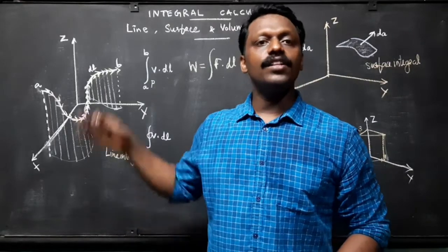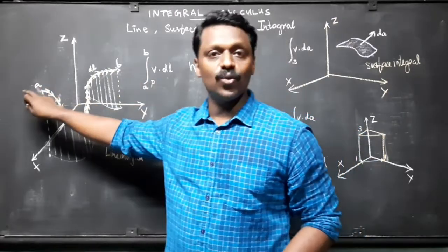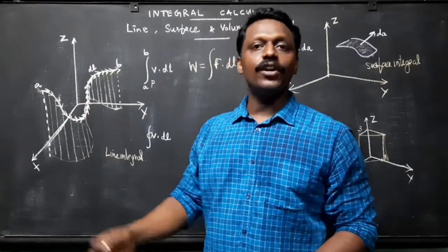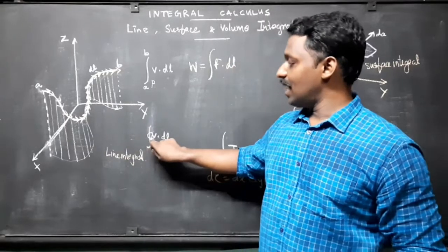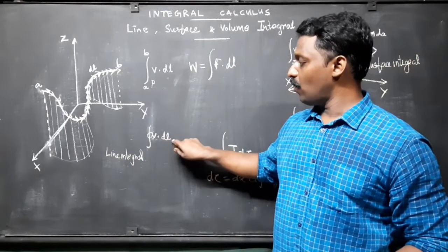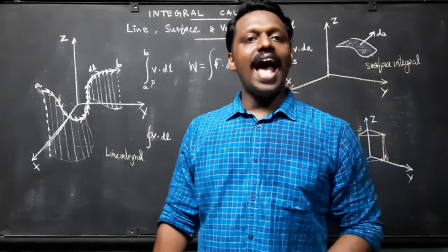If the path in question forms a closed loop, that is if b equals a, we shall put a circle on the integral sign as integral v dot dl along a closed path.